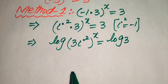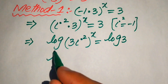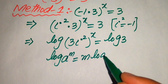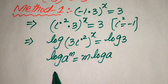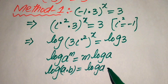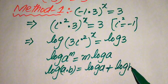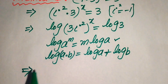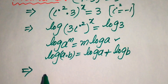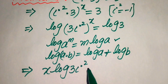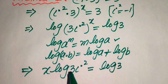Now we use the properties of logarithms. First, if we have log of a to the power n, it equals n times log a. Second, if two numbers are multiplied inside the log, we apply log separately on both values and add them. Applying the power property first, we move the exponent x to the front: x times log(3 · iota²) equals log 3.